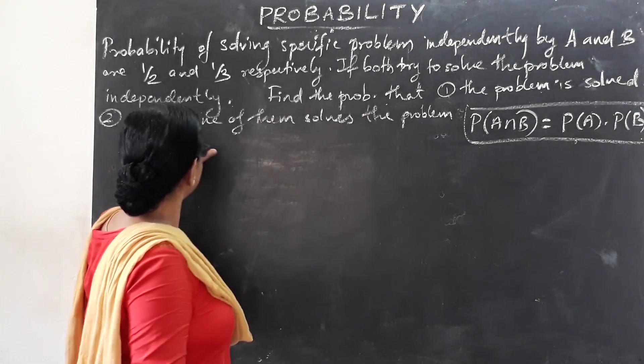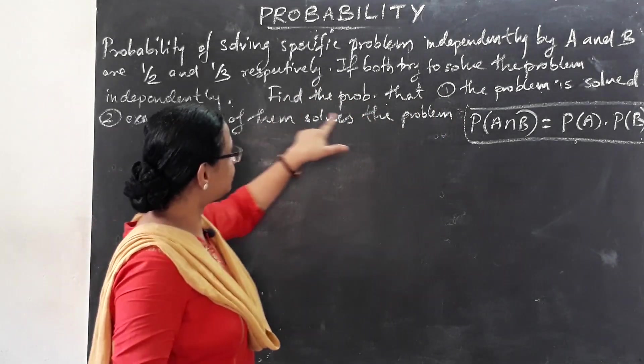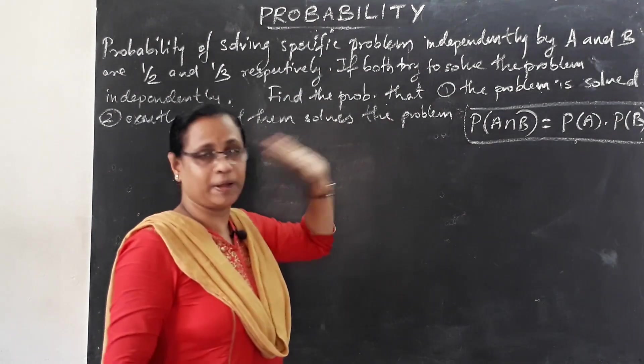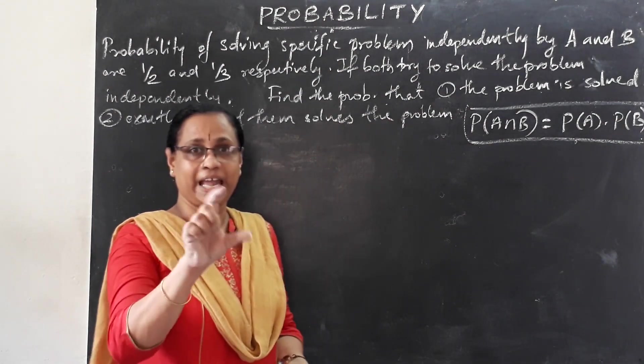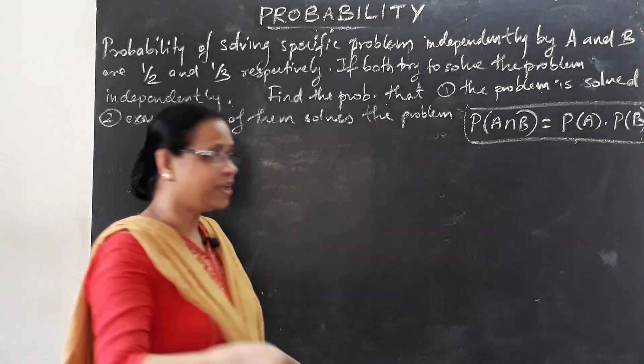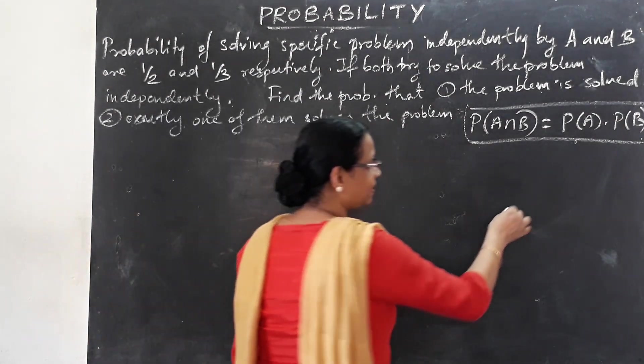The second question: find the probability that exactly one of them solves the problem. We have two variables, A and B, and we can treat these two variables separately.